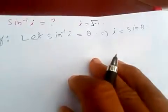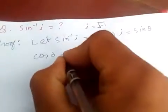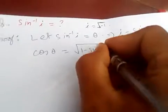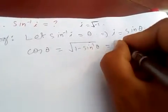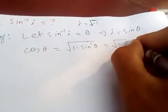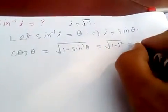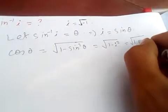So if I find out cos theta, it's equal to square root of 1 minus sine squared theta, which is square root of 1 minus i squared. Because sine theta is i, and i squared is just minus 1.